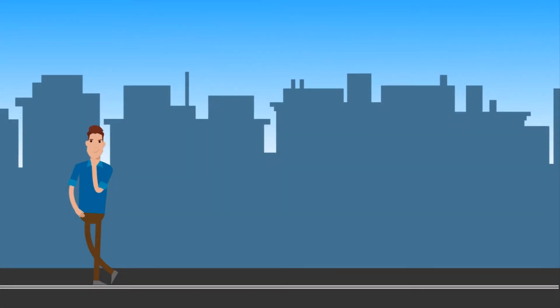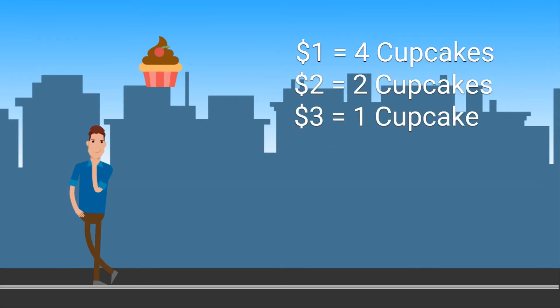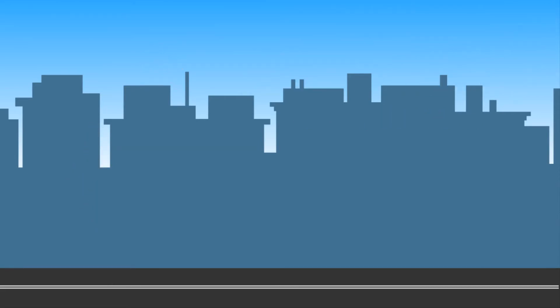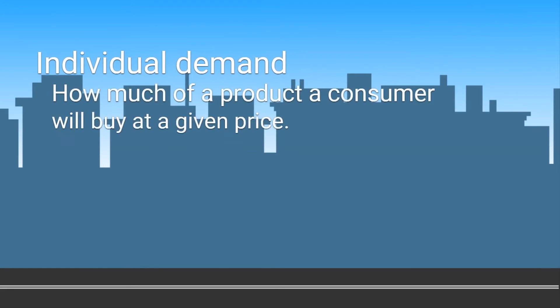First, let's look at individual demand. For instance, this is an individual's demand for cupcakes. We can see at one dollar a cupcake, he is willing and able to buy four. But at three dollars a cupcake, he is willing and able to buy just one. Individual demand is how much of a product a consumer will buy at a given price.